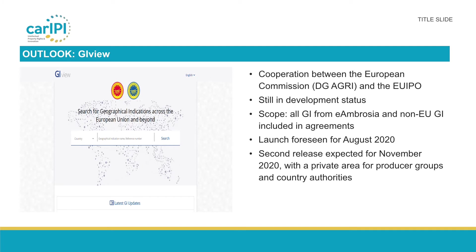The search for information about GIs, and especially non-EU GIs, will soon be facilitated by a new tool or database called GI-View. I will not go into details about GI-View because the EUIPO will provide more information once this portal goes online. GI-View has been created in cooperation between the European Commission and the EUIPO. It is currently still in development status, but should be launched this August, with a second launch expected for November of this year with a private area for producer groups and country authorities.